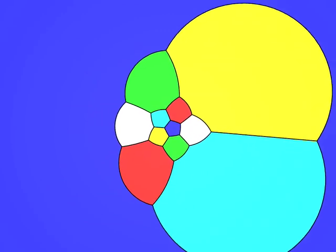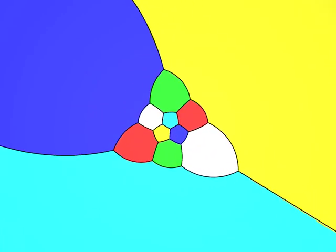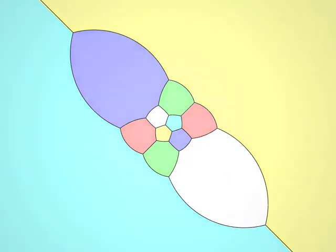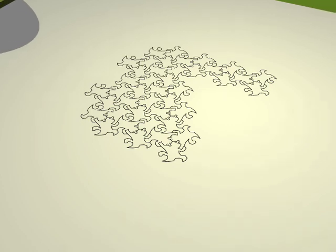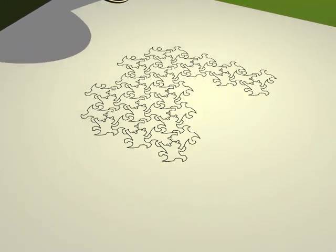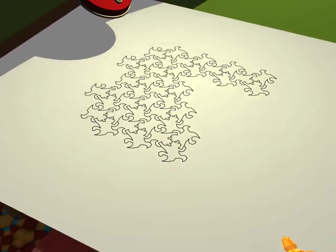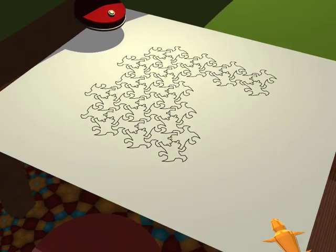These five solids have always fascinated geometers. The Greek philosophers attributed a magical importance to them by associating to each of them one of the fundamental elements from which the world is formed. We call these figures the platonic solids.